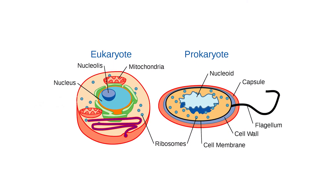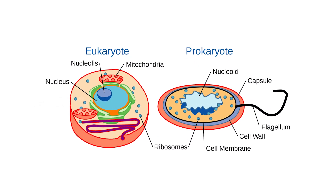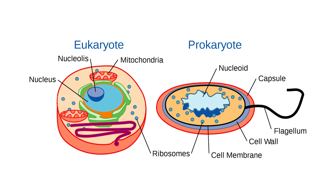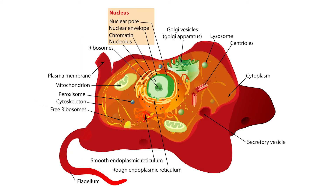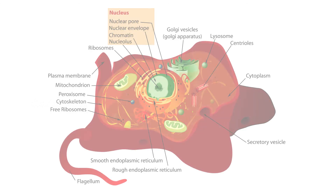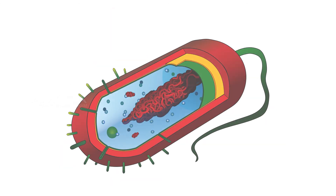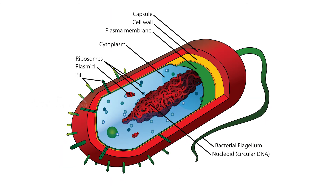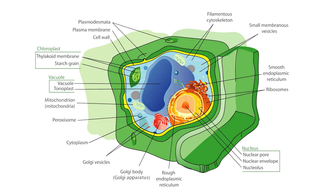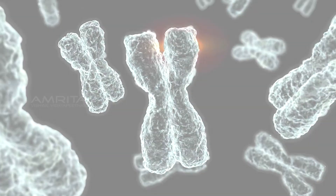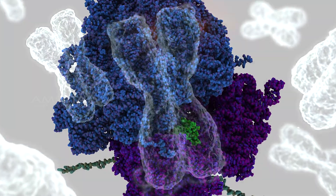Both prokaryotic and eukaryotic cells share certain basic features. They are all bounded by a selective barrier called the plasma membrane. Inside all cells is a semi-fluid, jelly-like substance called cytosol in which subcellular components are suspended. All cells contain chromosomes and ribosomes.